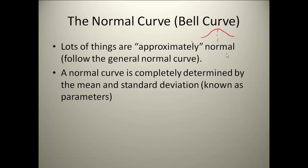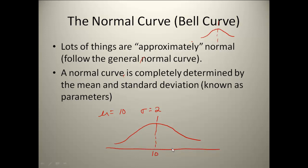A normal curve is completely determined by two parameters: the mean and the standard deviation. So for any particular data set, it has a special normal curve that fits with it. If I had a mean of 10 and a standard deviation of 2, my normal curve would have down the center my mean of 10, because it's symmetrical on both sides. With a standard deviation of 2, we use the 3 standard deviation rule to mark out 3 standard deviations, so we'd have 12, 14, and 16, and then 8, 6, and 4. That could be a picture of the normal curve determined by the parameters μ=10 and σ=2.